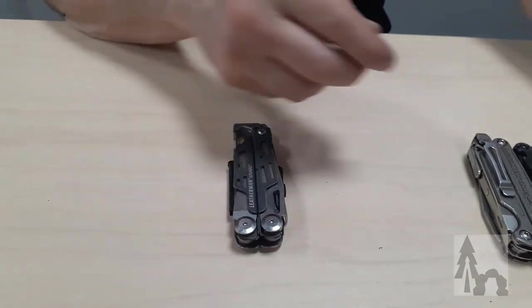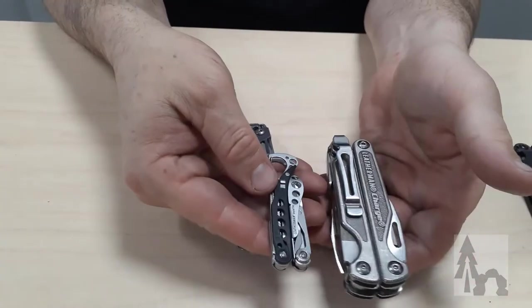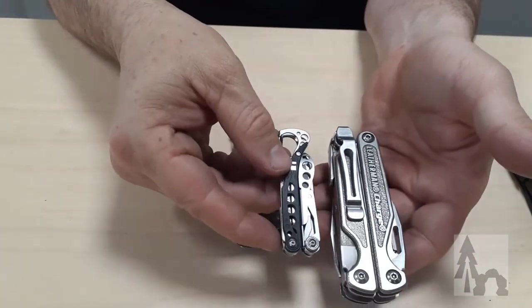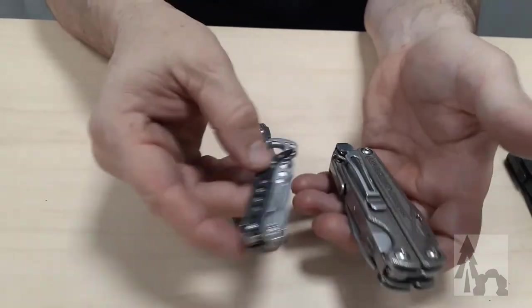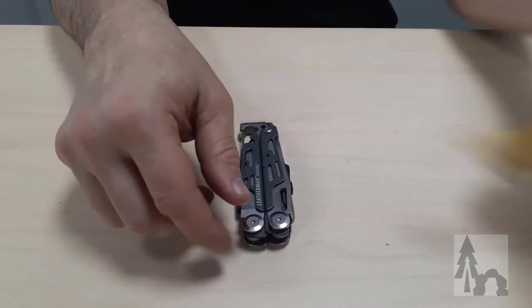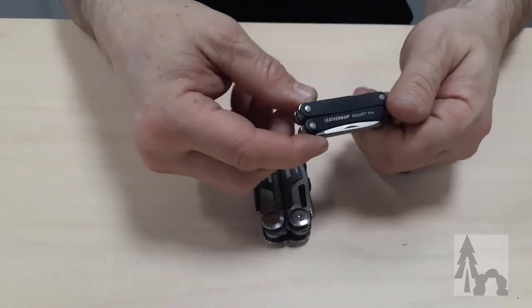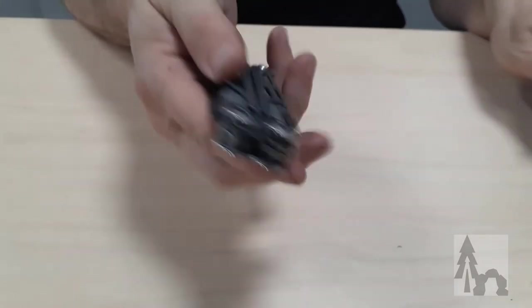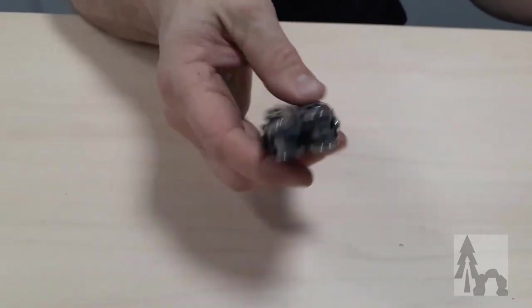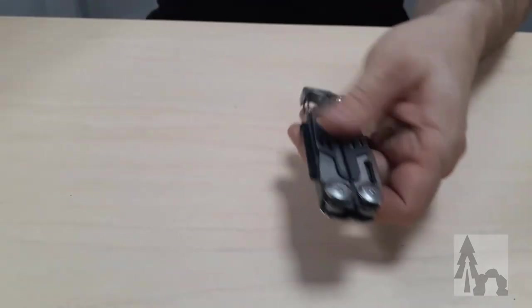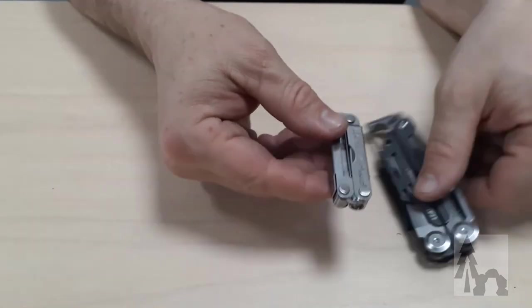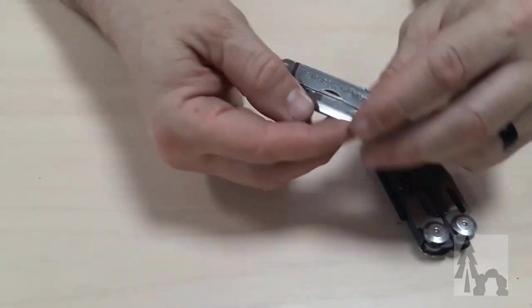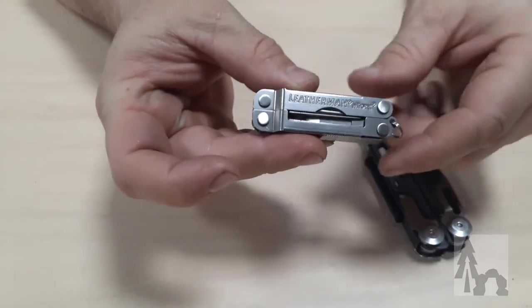I do know that Mark pairs his Charge up with the little Style PS, so he pairs those up. He has the smaller one he carries sometimes. I'll carry the Squirt as my multi-tool in a pocket when I'm not using the Leatherman. But when I go into the woods, the Signal is always with me.